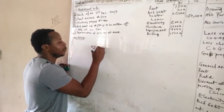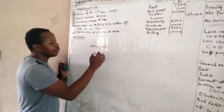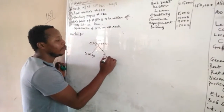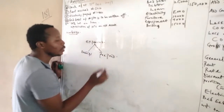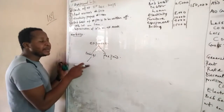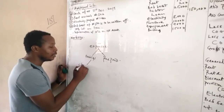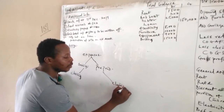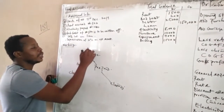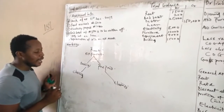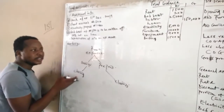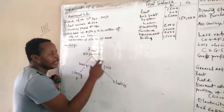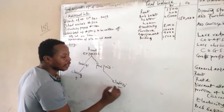In that scenario, if you are given expenses, note the chain: we always have owing and prepaid. Anything that appears in the additional information refers to closing information. If you are talking about closing rent — if rent is outstanding, you have to add it; if it is prepaid, you have to subtract it.